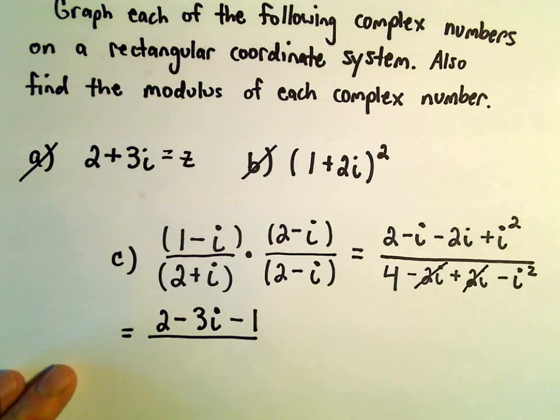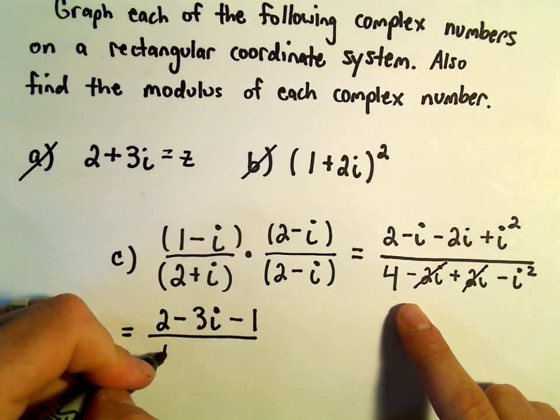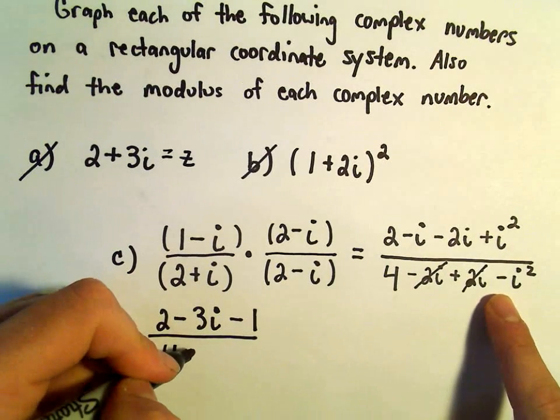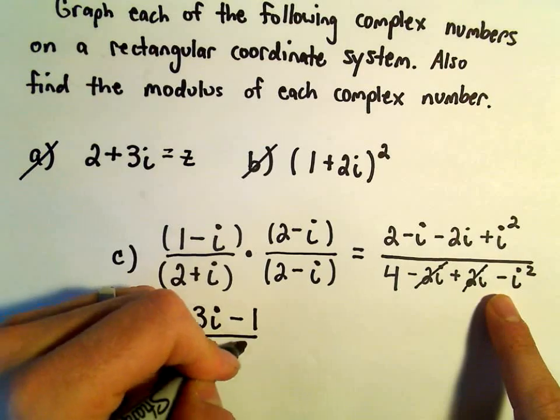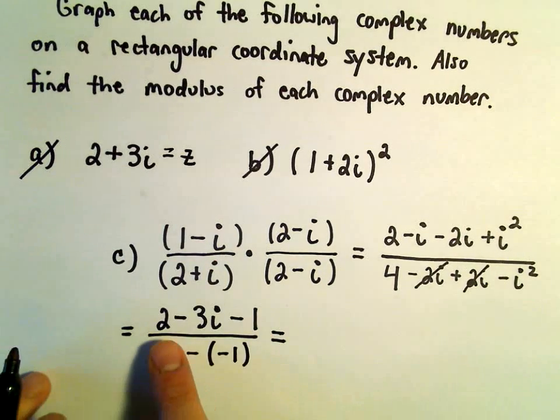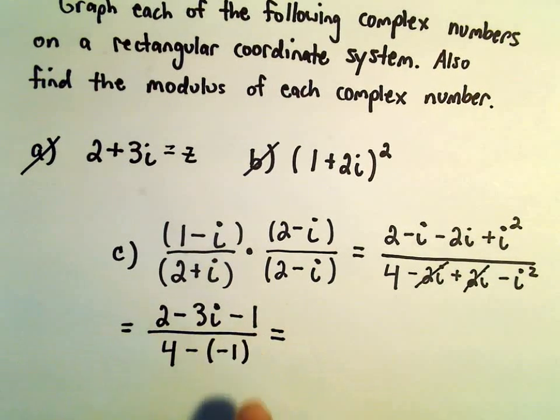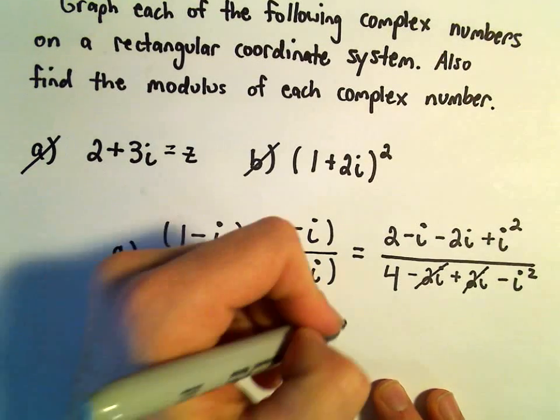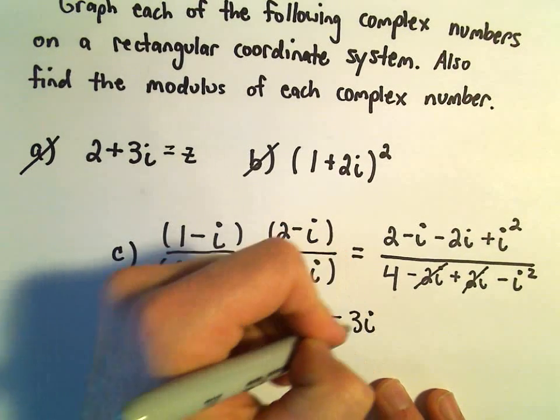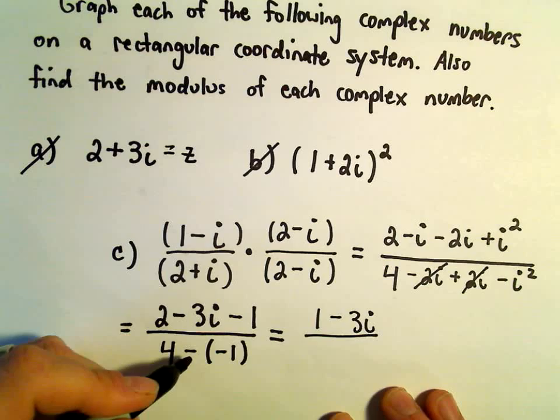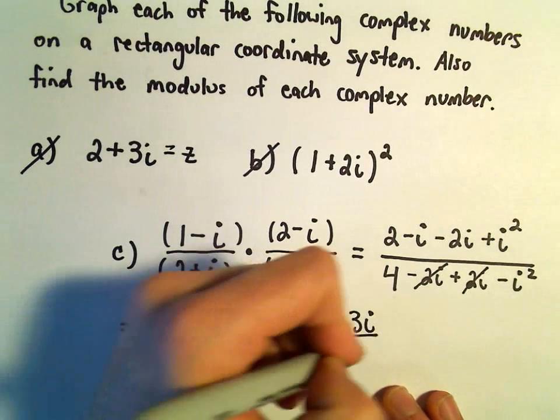Notice in the denominator, the negative 2i and the positive 2i cancel. We would have 4 minus i squared, which is negative 1. So in the numerator, we've got 2 minus 1, which is 1 minus 3i, all over 4 plus 1, which is 5.